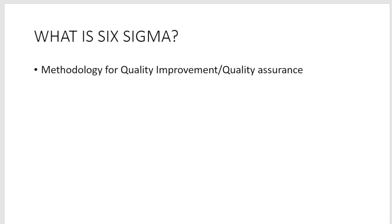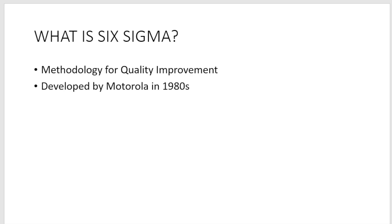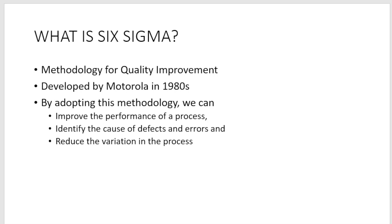What is Six Sigma? Six Sigma methodology is for quality improvement and quality assurance. In healthcare laboratories, quality improvement and quality assurance is of utmost importance. It was first developed by Motorola company in the 1980s and gave enormous profit. By adopting this methodology, we can improve the performance of a process, identify the causes of defects and errors, and reduce the variation in the process.